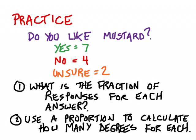So, here's a set of practice problems for you to practice with this. Do you like mustard? That's going to be our survey question, and here are your made-up responses. Yes, seven, no, four people said no, and then two people were unsure. So, question one, I want you to tell me, what was the fraction of responses for each answer? That should be pretty easy. And then number two, for each of those, I want you to use a proportion to calculate what degrees of a pie chart that would end up being. This is going to be one where you really have to use a proportion to do it correctly, because these make a really unusual number of total responses. You can round to the nearest hundredth if you want to. All right, go for it.